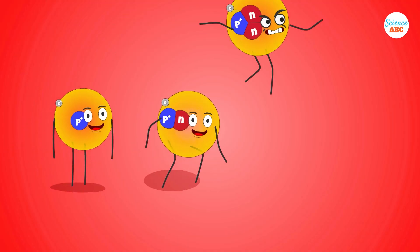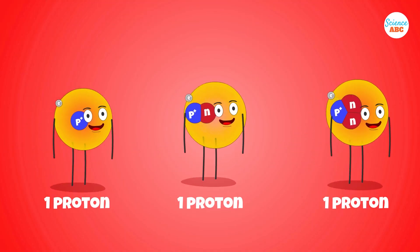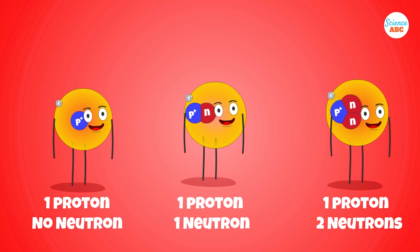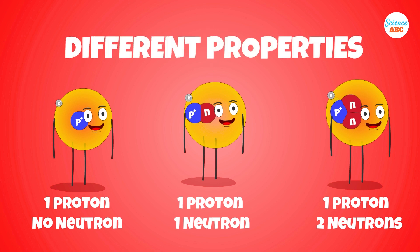Isotopes are different forms of an element with the same number of protons but different numbers of neutrons. This means that isotopes belonging to the same family of element have different properties.